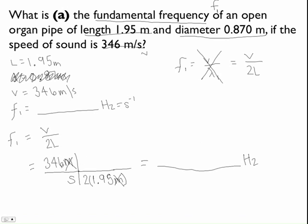So you can do 346 divided by 2 times 1.95. If you want to do it all in one, go ahead, put an extra parenthesis around these just to be safe.